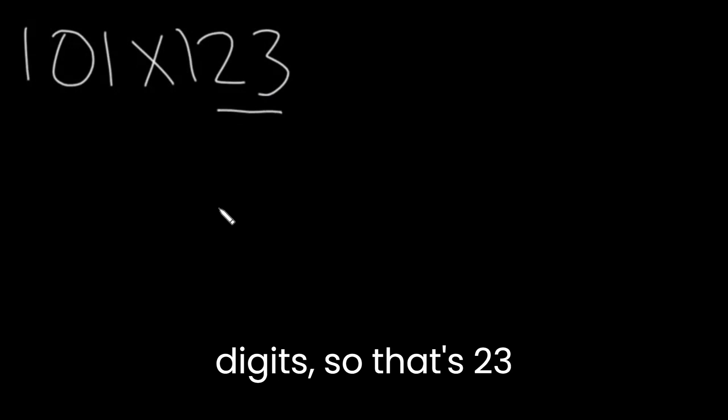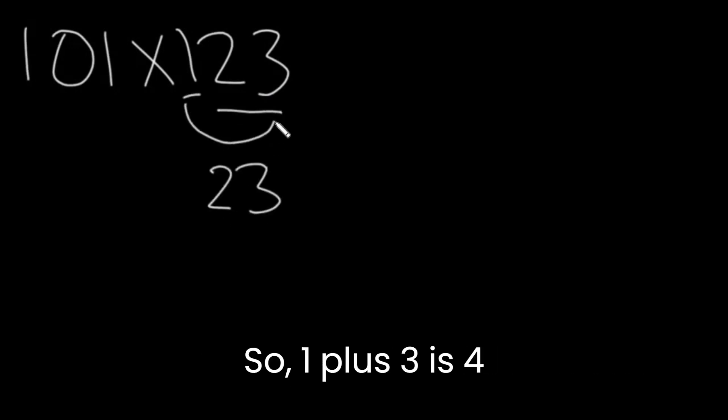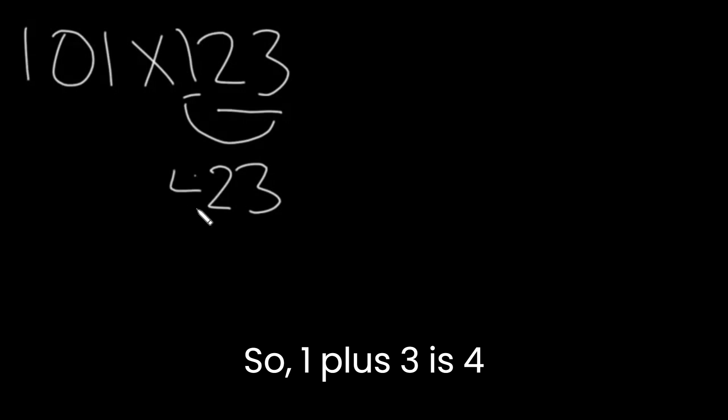Let's say we have 101 times 123. Again, we're going to write the last two digits, so that's 23. Then we're going to add these two. So 1 plus 3 is 4. And then we're going to write these two digits. So that's 12. This is our final answer.